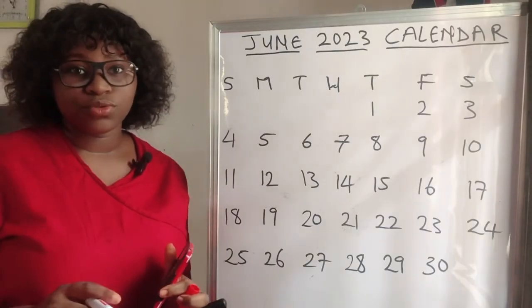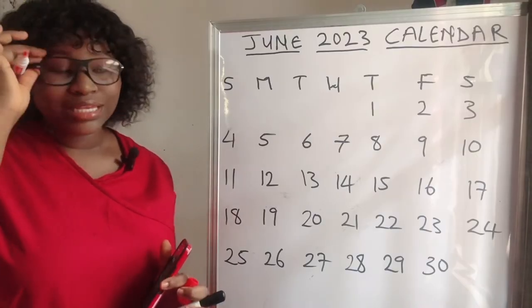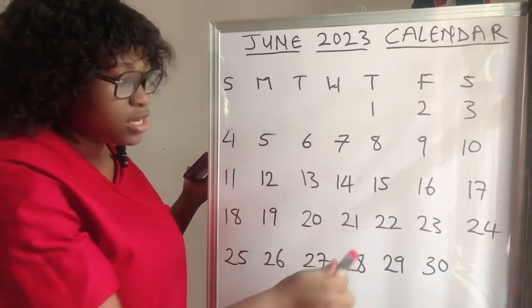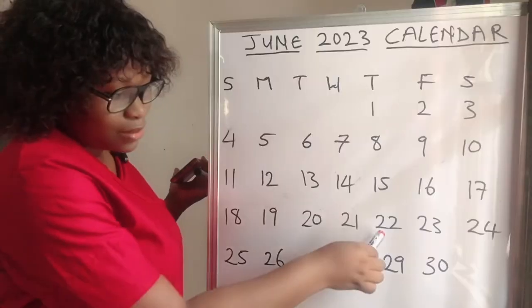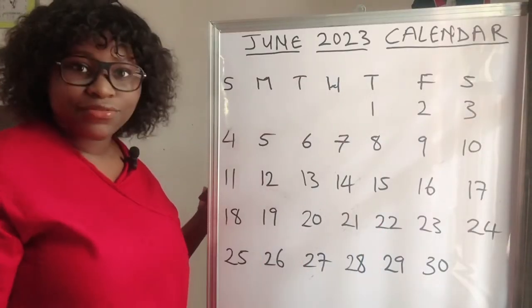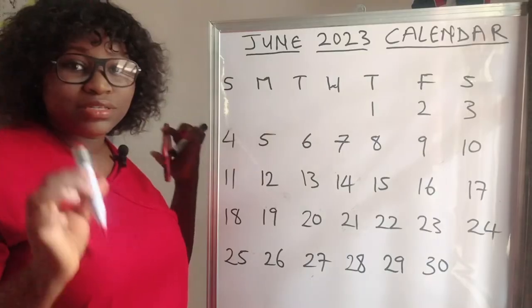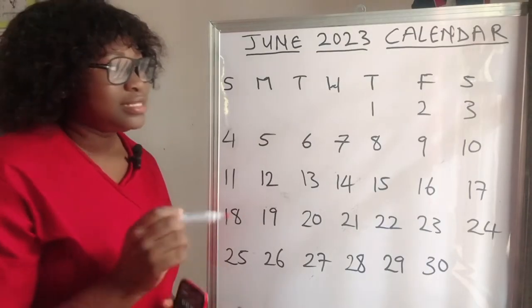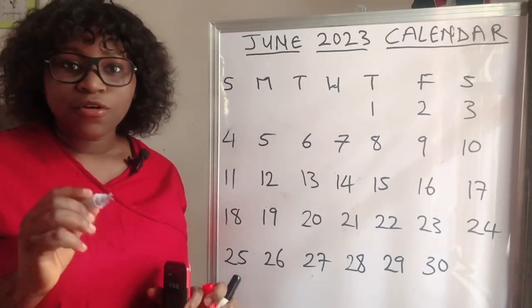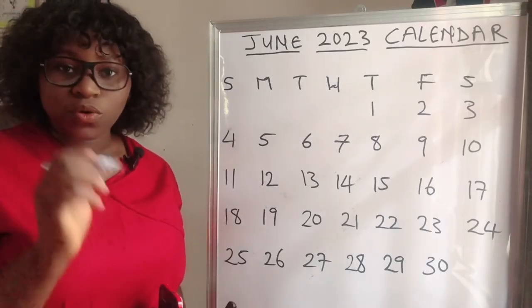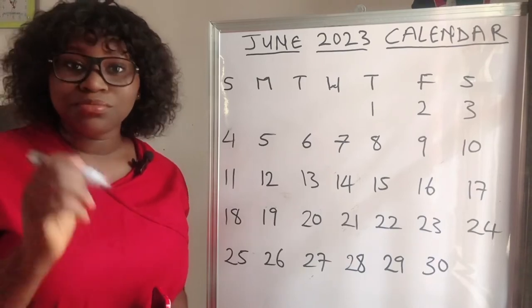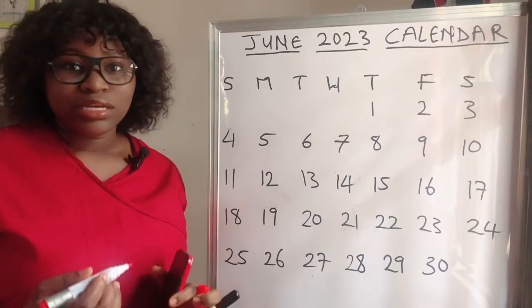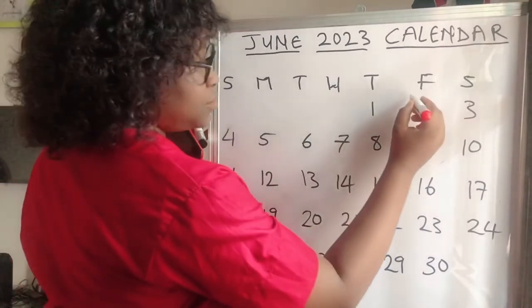We're going to use Mrs. A's cycle as an example. Her period for the month of June started on the 2nd. It can start on any day — the 7th, the 14th, the 22nd, the 27th — but for this example we're using the 2nd. And when I say it started, I don't mean spotting; I mean the main flow. So her period started on the 2nd.